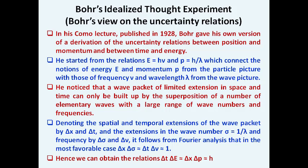Bohr noticed that a wave packet of limited extension in space and time can only be built up by superposition of many elementary waves with a large range of wave numbers and frequencies. He derived the spatial and temporal extensions of the wave packet as Δx and Δt, defining extension for wave number as σ = 1/λ with Δσ and Δν. Following Fourier analysis, he found that the product of displacement and wave number, and also of time and frequency, is approximately equal to 1, and similarly the product of energy variation and time error is approximately equal to h.